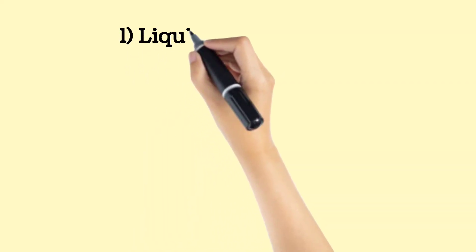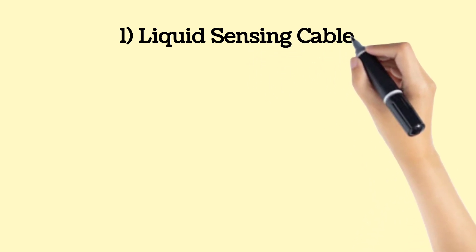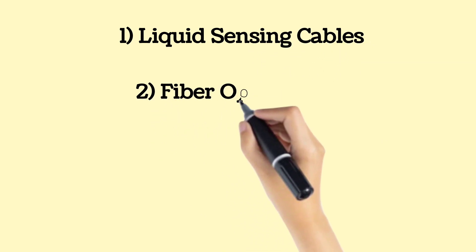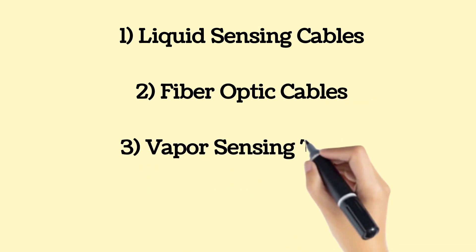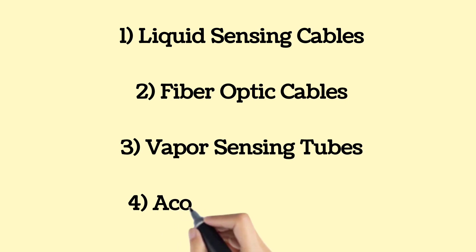In terms of detecting pipeline leaks, external instrumentation for detecting spilled hydrocarbons includes liquid sensing cables, fiber optic cables, vapor sensing tubes, and acoustic emissions.